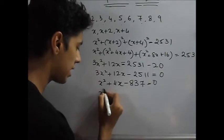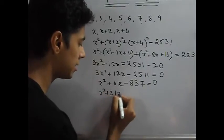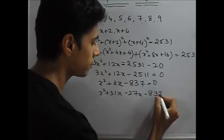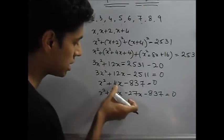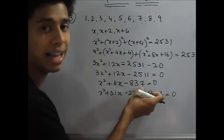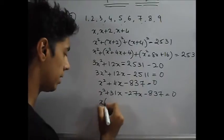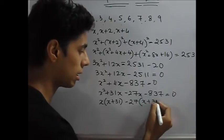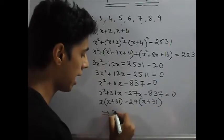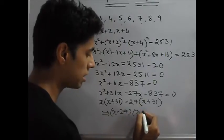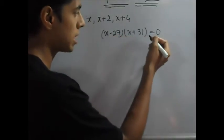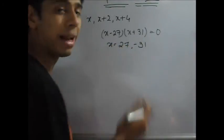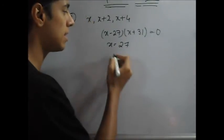Now if you factorize it, it gives you x square plus 31x minus 27x minus 837 is equal to 0. Now 31 minus 27 is equal to 4. 31 into minus 27 gives you minus 837. Now take x common, x plus 31. We take minus 27 common here, it gives you x plus 31. So this implies x minus 27 and x plus 31. Now x will be equal to either 27 or minus 31. Now minus 31 it cannot be, so you remove it out. So x is equal to 27.